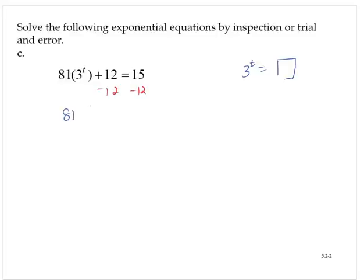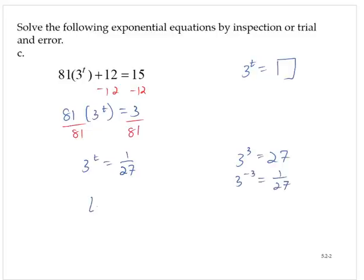So that 81 times 3 to the t is equal to 3. Dividing through by 81, 3 to the t. Now 3 over 81, reducing that fraction, that's 1 over 27. And recall that 3 to the third is 27. So then 3 to the negative third would be 1 over 27. So then t is equal to negative 3.